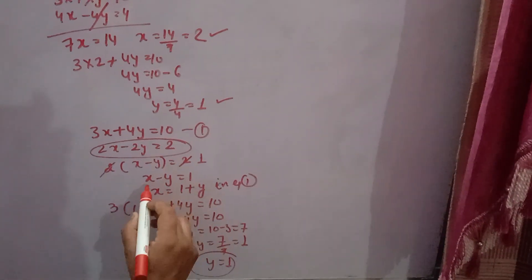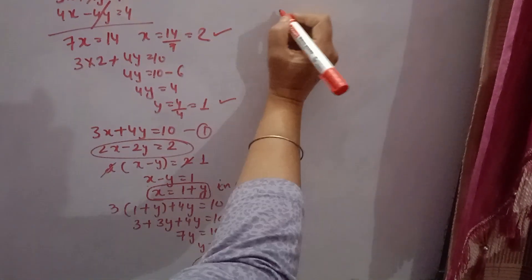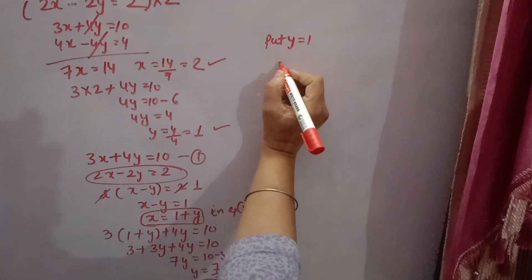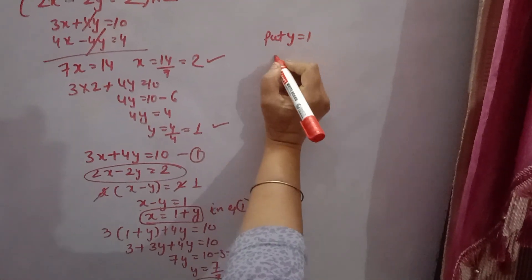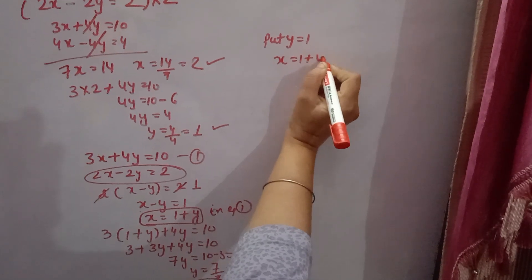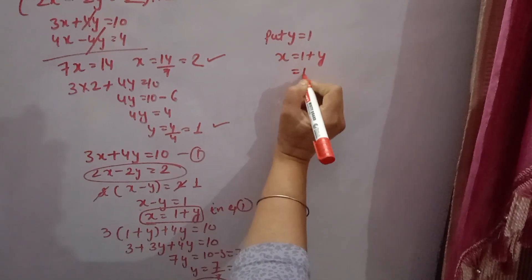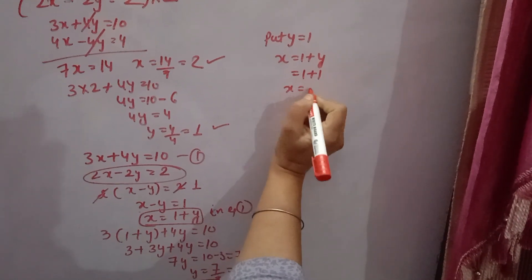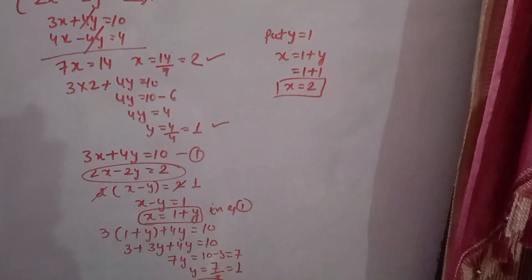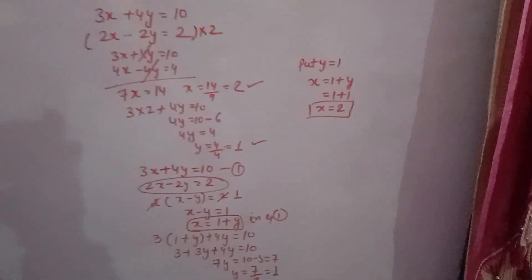Now substitute y equals 1 back into x equals 1 plus y, so x equals 1 plus 1, which gives x equals 2. Therefore x equals 2 and y equals 1 is the answer. Thank you.